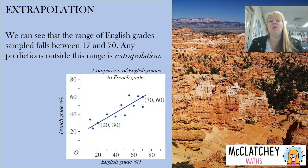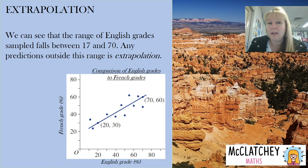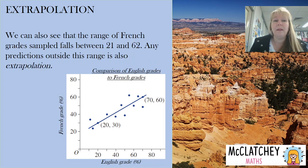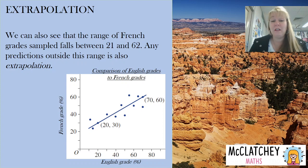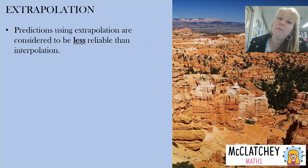In our example, the range of English grades falls between approximately 17 and 70. Any predictions made below 17 or above 70 on the x-axis is extrapolation — it's not just the upper end, it includes the minimum values too. Similarly, French grades range between about 21 and 62, and making predictions outside that range on the y-axis is also extrapolation.